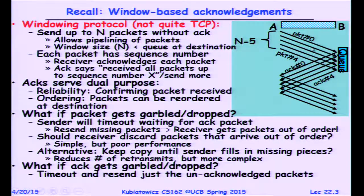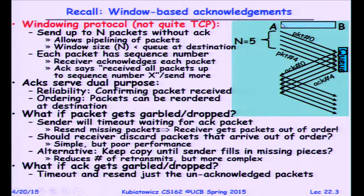With separate sequence numbers, we can have many packets in flight, they can become reordered in the network, and we can still order them at the destination. The reason to have more than one packet in flight is pipelining. Without that, you could have a 10 gigabit link and get only a few kilobytes per second because you'd have to transmit something, wait for the ACK, transmit the next one, and so on. By pipelining, we get much better use of the bandwidth.